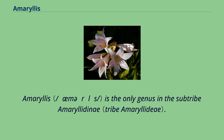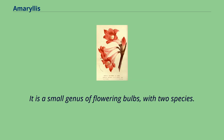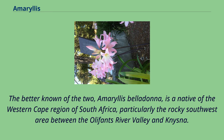Amaryllis is the only genus in the subtribe Amaryllidinae. It is a small genus of flowering bulbs with two species. The better known of the two, Amaryllis belladonna, is a native of the western Cape region of South Africa, particularly the rocky southwest area between the Oliphants River Valley and Knysna.